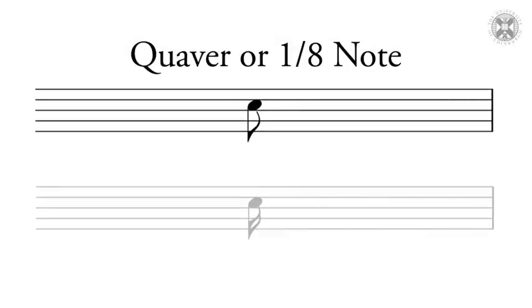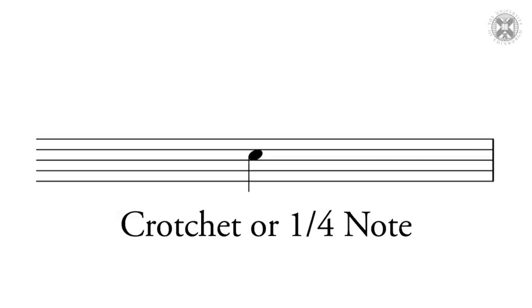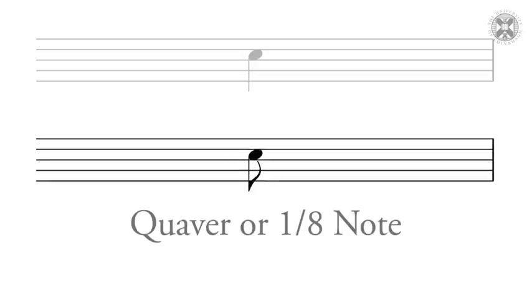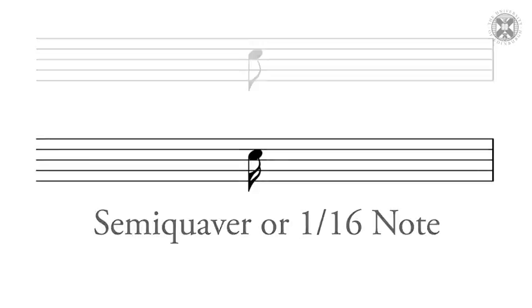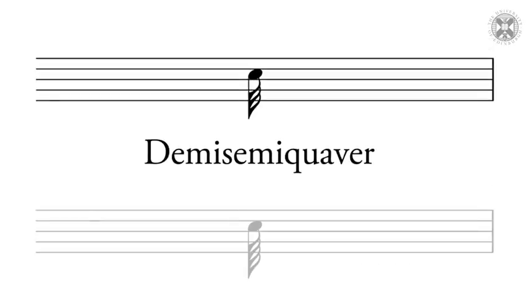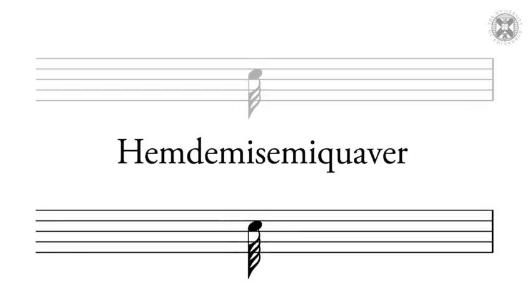The quaver and semiquaver notes are essentially crotchets with little flags on their stems. Each flag that you add divides the rhythm by two, so we could further divide semiquavers into demisemiquavers or thirty-second notes in American parlance, and these can be further subdivided into hemidemisemiquavers or sixty-fourth notes, et cetera.